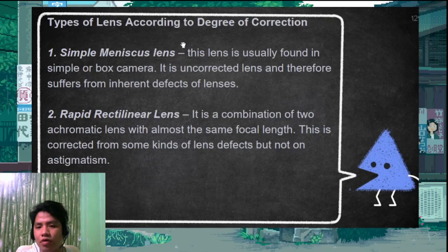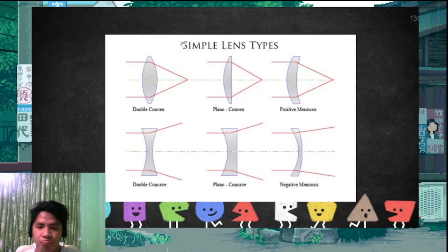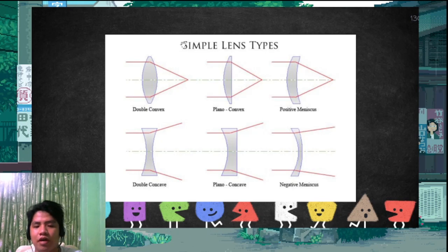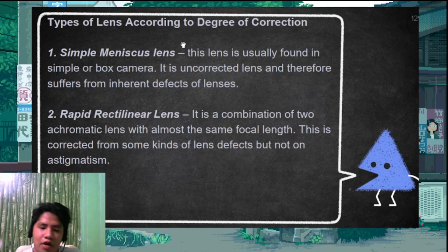There are types of lenses according to degree of correction. The simple meniscus lens is a simple lens with one convex and one concave surface — positive or negative. The rapid rectilinear lens is a combination of two achromatic lenses with almost the same focal length, used to correct chromatic and spherical aberration, but not astigmatism.